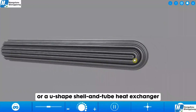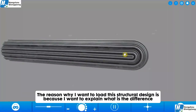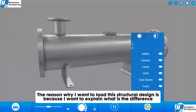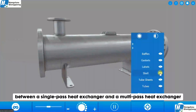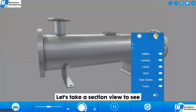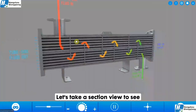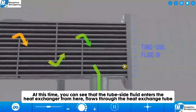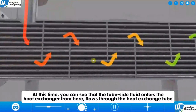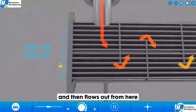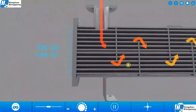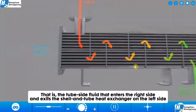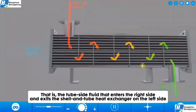The reason why I want to load this structural design is because I want to explain the difference between a single-pass heat exchanger and a multi-pass heat exchanger. Let's take a section view to see. You can see that the tube side fluid enters the heat exchanger from here, flows through the heat exchange tube, and then flows out from here — entering on the right side and exiting on the left side of the shell and tube heat exchanger.